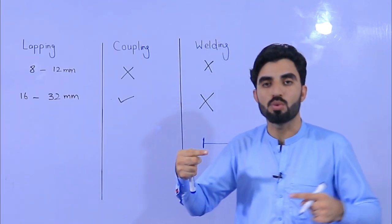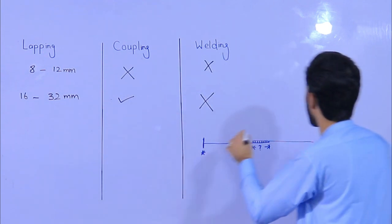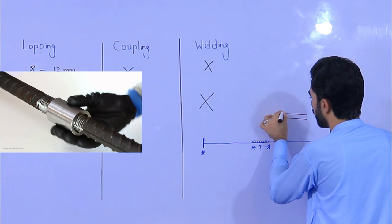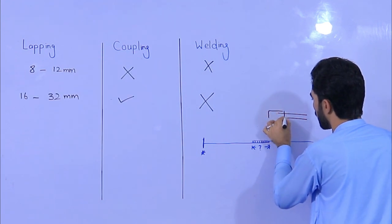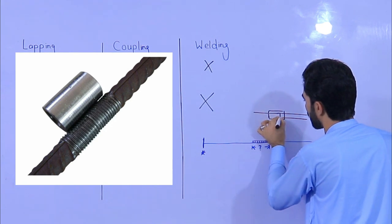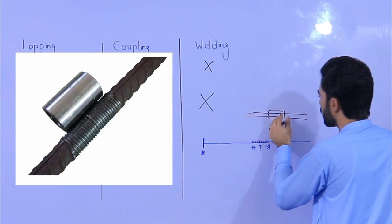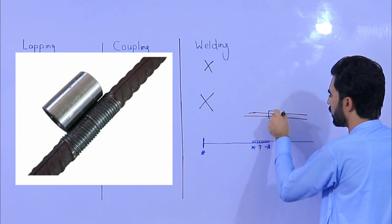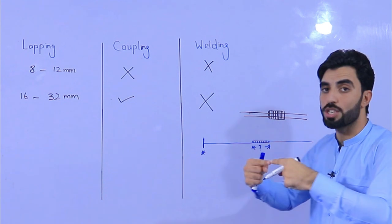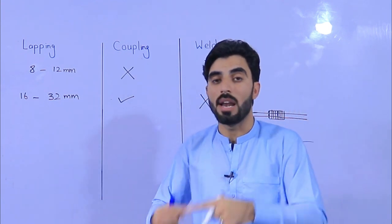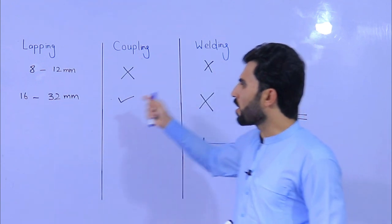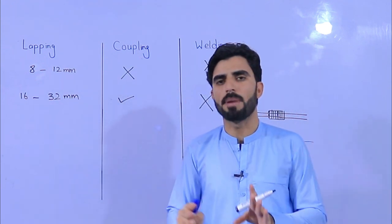One steel bar joins to another steel bar like this — as you can see, this is one steel bar, here is the coupling, and the other steel bar comes in from the other side. We have threads here, and with the help of these threads we can join one steel bar to another to get the lapping length or to increase the length of the steel bar.